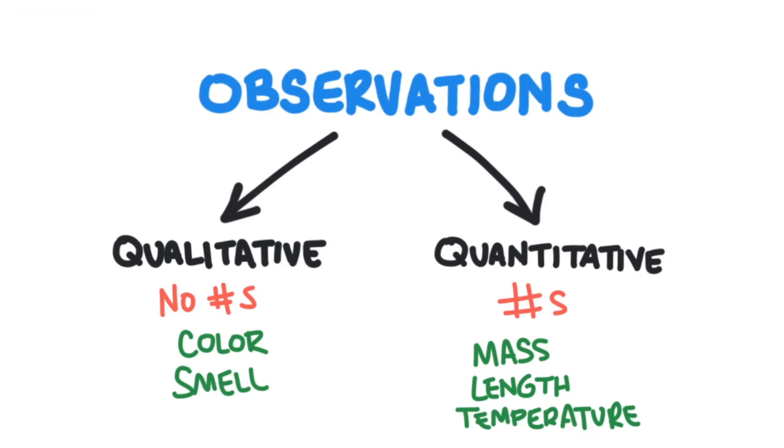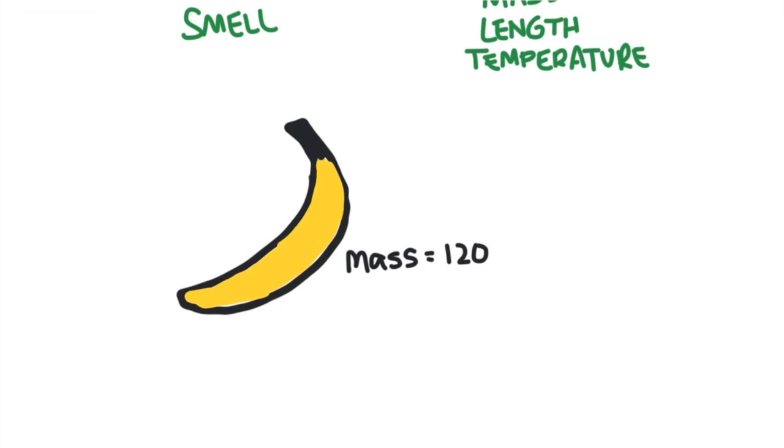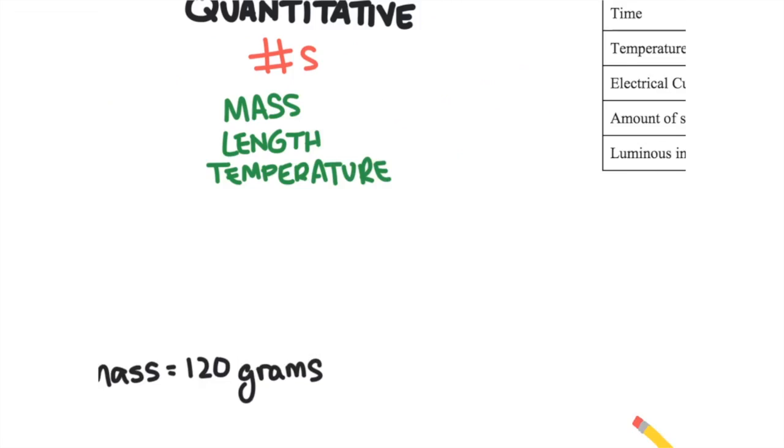A quantitative observation is only meaningful in science if it includes both a number and a unit. For example, if I told you that a banana had a mass of 120, you would think, 120 what? I've only given you half of the observation. Now to say the banana has a mass of 120 grams makes some sense, because I have provided both the number and the unit.